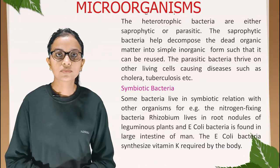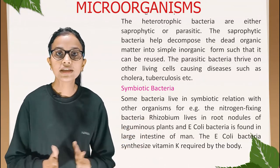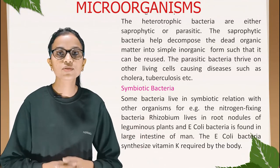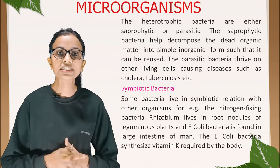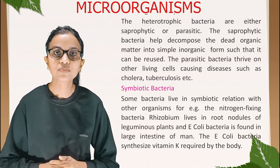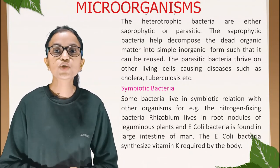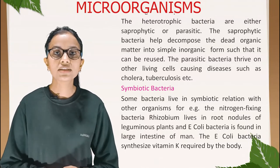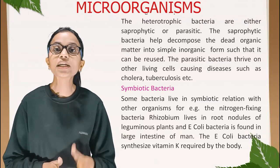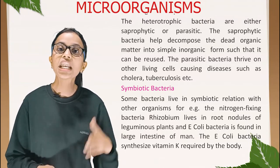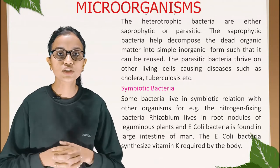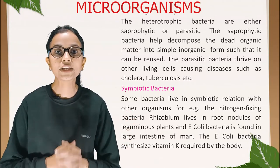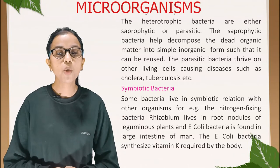Symbiotic bacteria: some bacteria live in symbiotic relation with other organisms. For example, the nitrogen-fixing bacteria Rhizobium lives in root nodules of leguminous plants. E. coli bacteria is found in the large intestine of humans and synthesizes vitamin K required by the body.